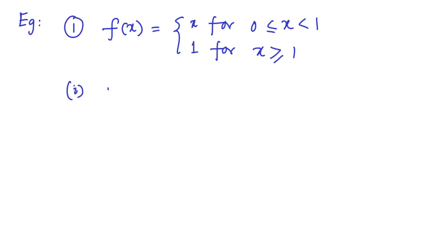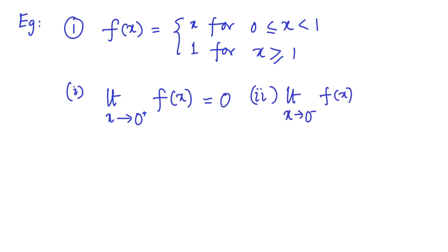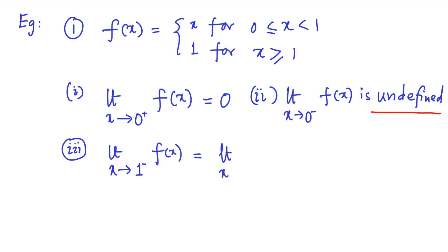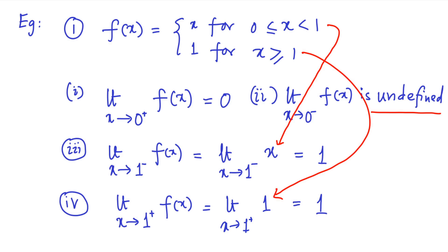Let us now recall the example that we considered earlier. Here you can see that the right-hand limit of the function F of X at the point 0 plus is actually 0. On the other hand, the left-hand limit of the function at X equal to 0 minus is undefined because if you look at the function, the function definition does not include the point 0 minus. On the other hand, if you look at the point X equal to 1, the left-hand limit, that is, X goes to 1 minus is equal to 1. On the other hand, even the right-hand limit of the function is equal to 1. So at X equal to 1, we can say the function has a limit. On the other hand, at X equal to 0, the function does not have the limit because it is not defined.